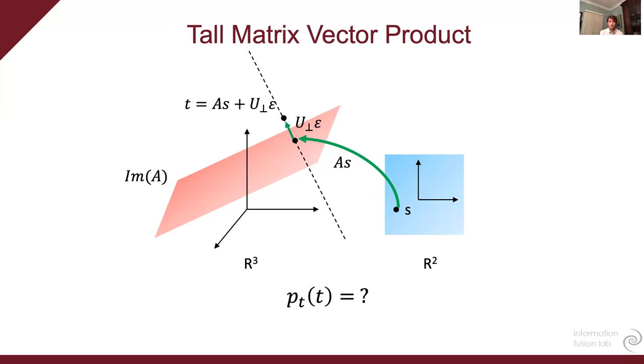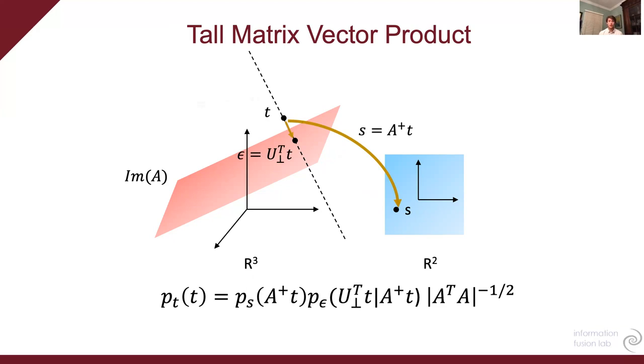And this mapping is also bijective. If we have a T, we can uniquely identify the epsilon and S that generated it. Because we have a bijective map, we can apply the change of variables formula and we have a density equation for T.